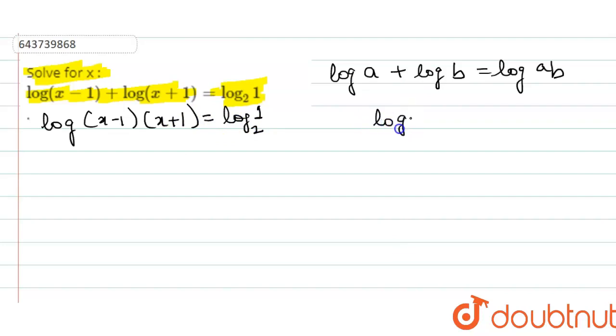Here another property: log 1 to the base 2 has the value 0. It means that any value log 1 to the base a is always equals to 0. So the right hand side of the equation will become 0.